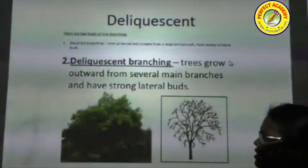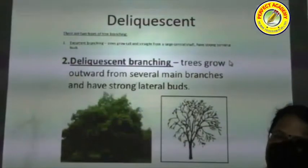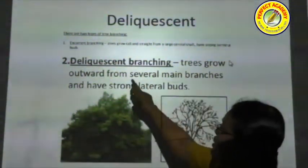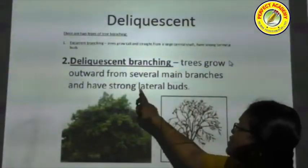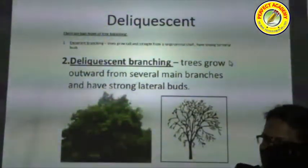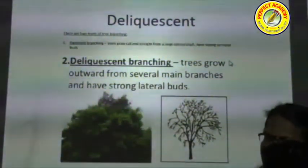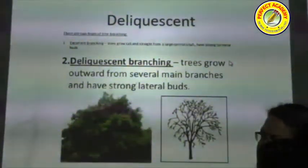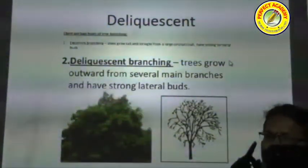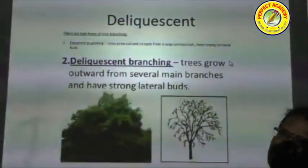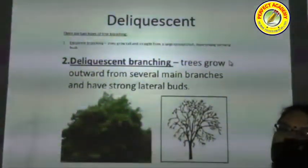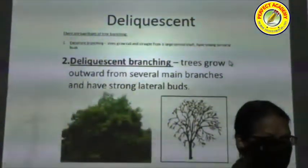Deliquescent stems are commonly seen in most angiosperms. In deliquescent branching, the main stem produces many strong lateral branches, giving the tree an outward spreading growth. Examples include mango tree, neem tree, and Jatropha (called badham tree in Tamil).